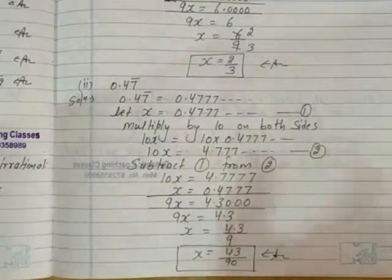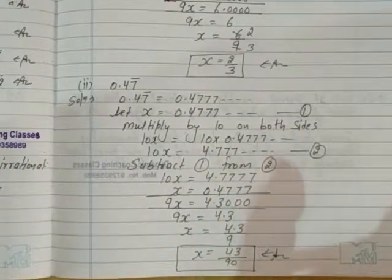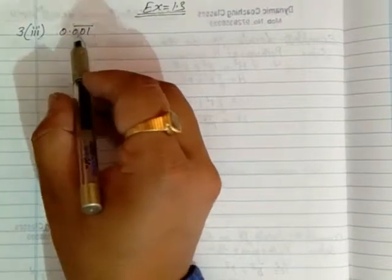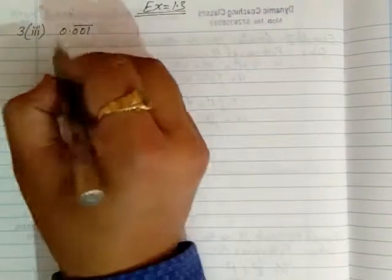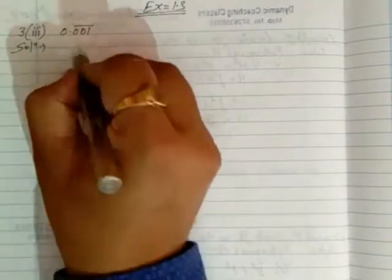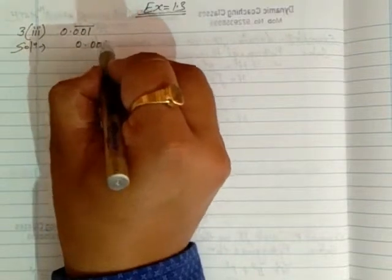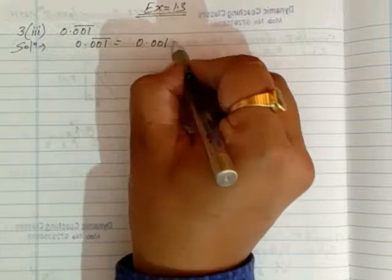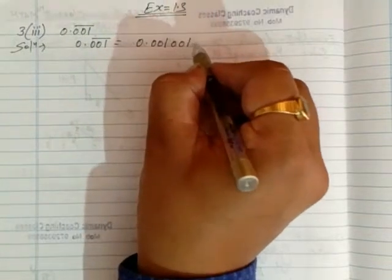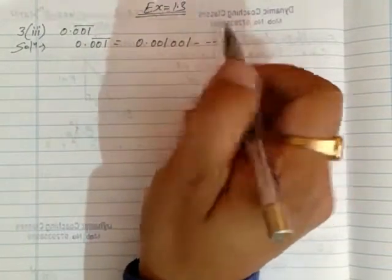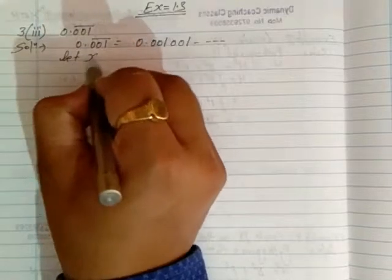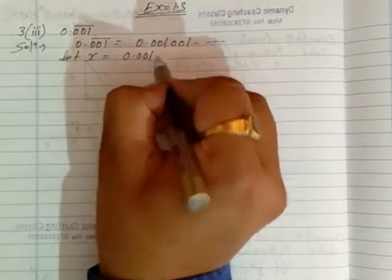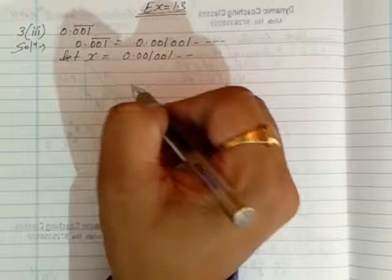Now for the third part: 0.001 bar. This has three digits under the bar. So we can write this as 0.001001001... and so on. Let x equal to 0.001001001... and so on. This is our first equation.